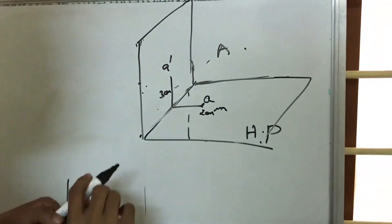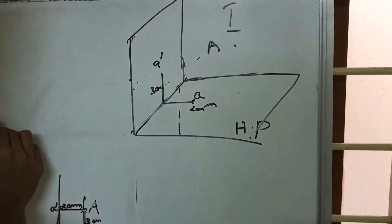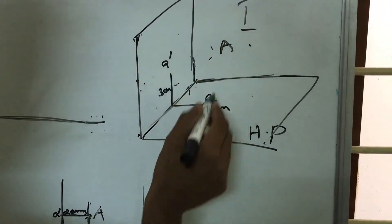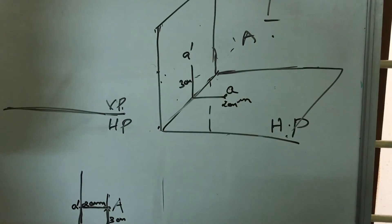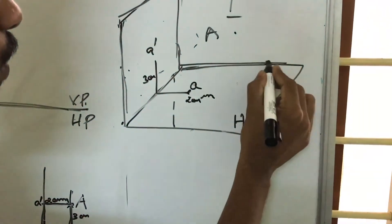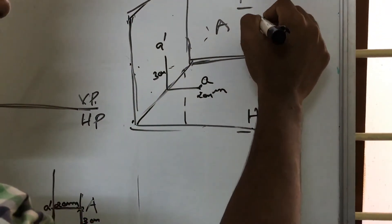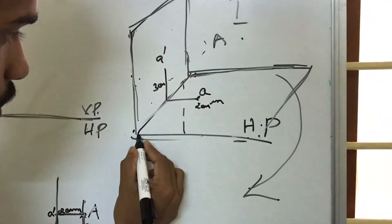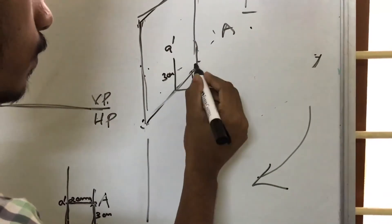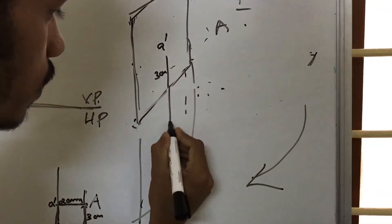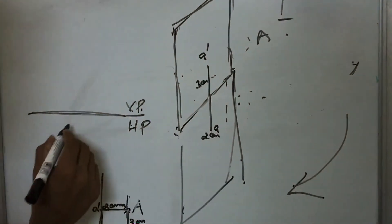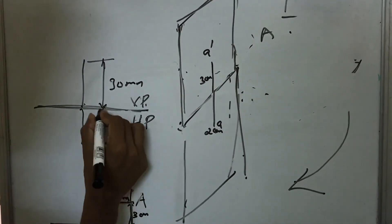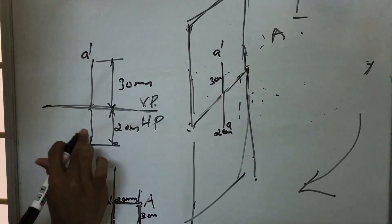The problem is in the first quadrant. Now how to draw onto a single plane — HP and VP. To convert into VP and HP: this is the vertical plane and this is the horizontal plane. We rotate the horizontal plane in the clockwise direction. The horizontal plane comes here and the projected point is 30mm and 20mm, named 'a dash'.